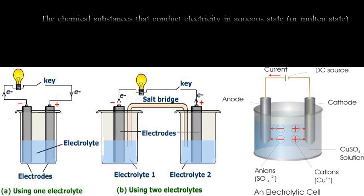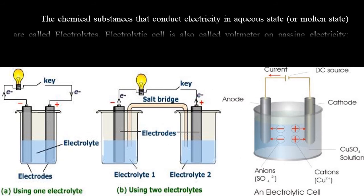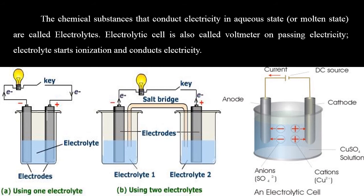The chemical substances that conduct electricity in aqueous state or molten state are called electrolytes. Electrolytic cell is also called voltmeter on passing electricity. Electrolyte starts ionization and conducts electricity.